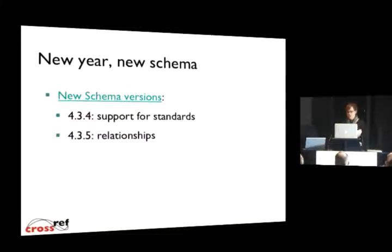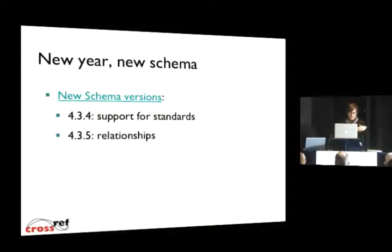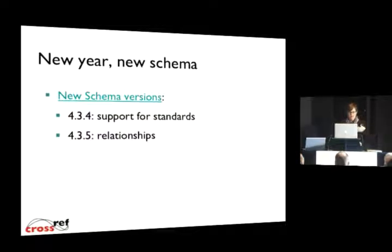As far as what we've done this past year, we've iterated the schema two times. Version 4.3.4 is the most substantial revision and is focused on support for standards. We've had a standards content type for a long time, but we're expanding it to make standards more visible in our system. We added a standard designator field along with some other changes, and those changes are still ongoing.